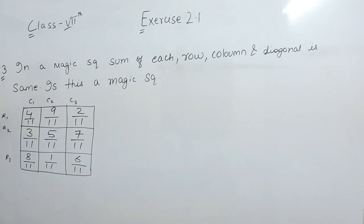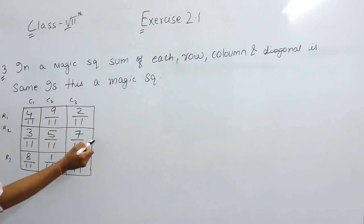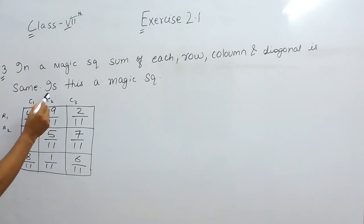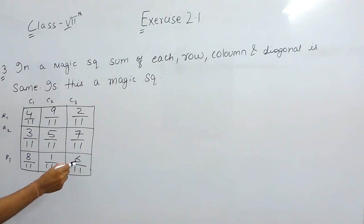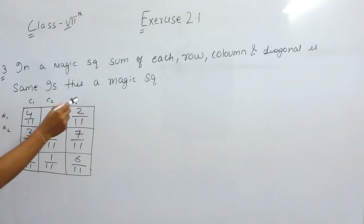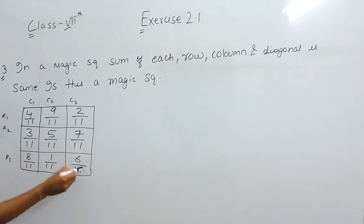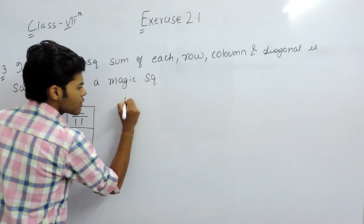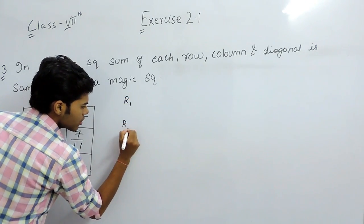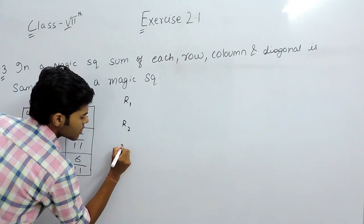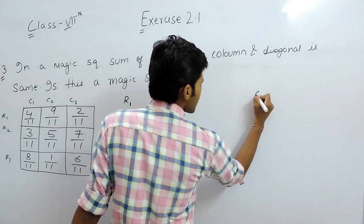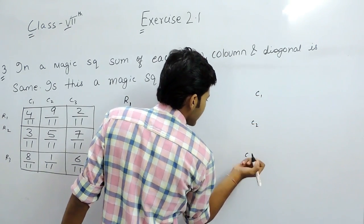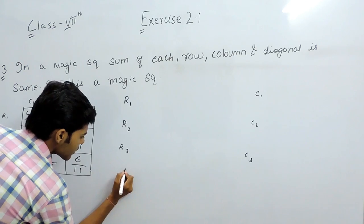This is the first row, second row, third row, this is the first column, second column, third column, left diagonal and right diagonal. So first of all we will write the rows, then we will write the columns and then we will write the diagonals.